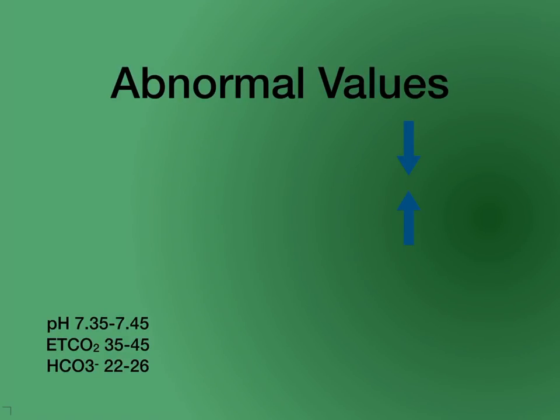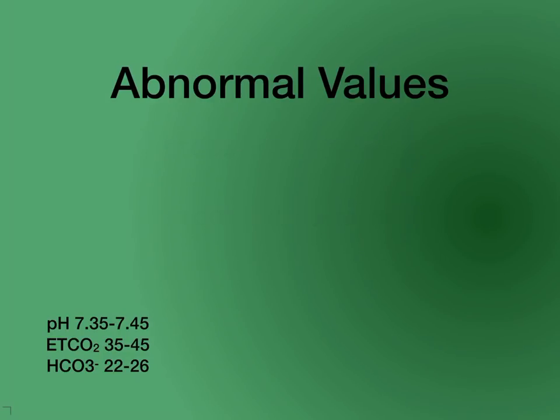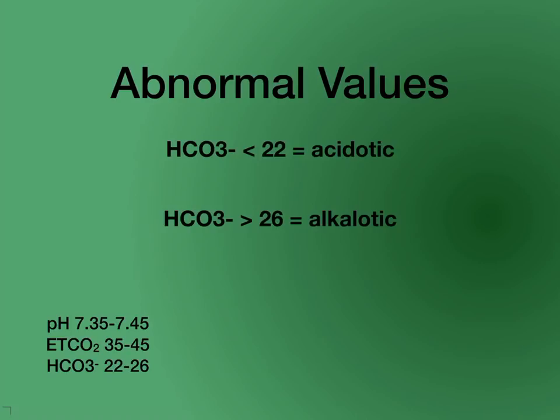When looking at exhaled CO2, if we see a level below 35, we tend to think alkalosis, and if it's over 45, we tend to think the patient is a little acidotic. For bicarbonate, if the bicarb level is below 22, they're acidotic, and if it's greater than 26, we consider it alkalotic.